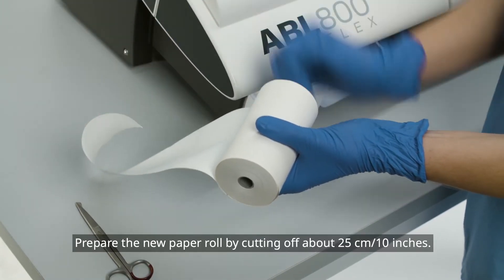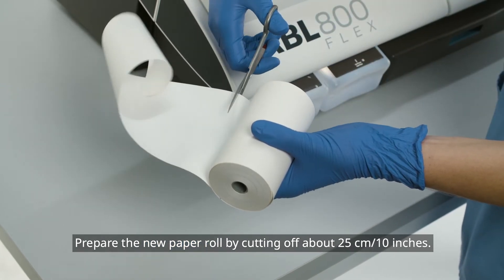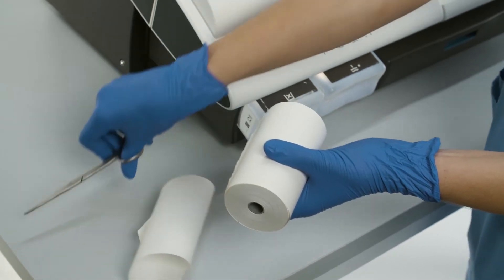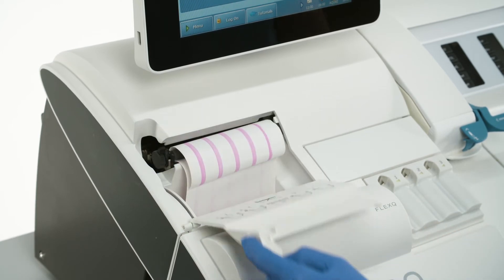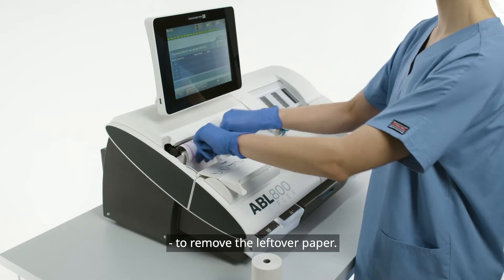Prepare the new paper roll by cutting off about 25 centimeters or 10 inches. Open the paper compartment and move the release lever fully back to remove the leftover paper.